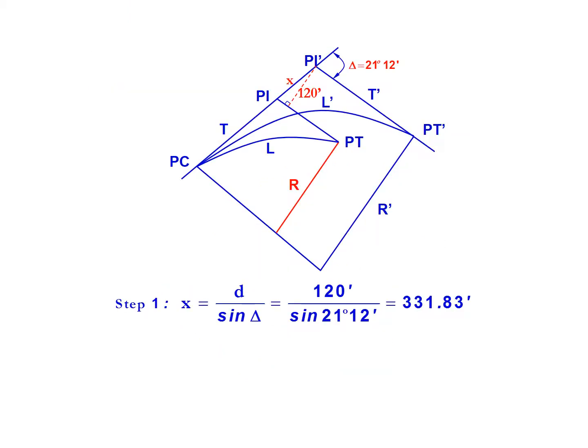The first step is to find x, the distance along the tangent that equals d, the parallel offset distance, divided by the sine of delta. So that's 120 feet divided by the sine of 21 degrees 12 minutes, which gives us an x of 331.83 feet.